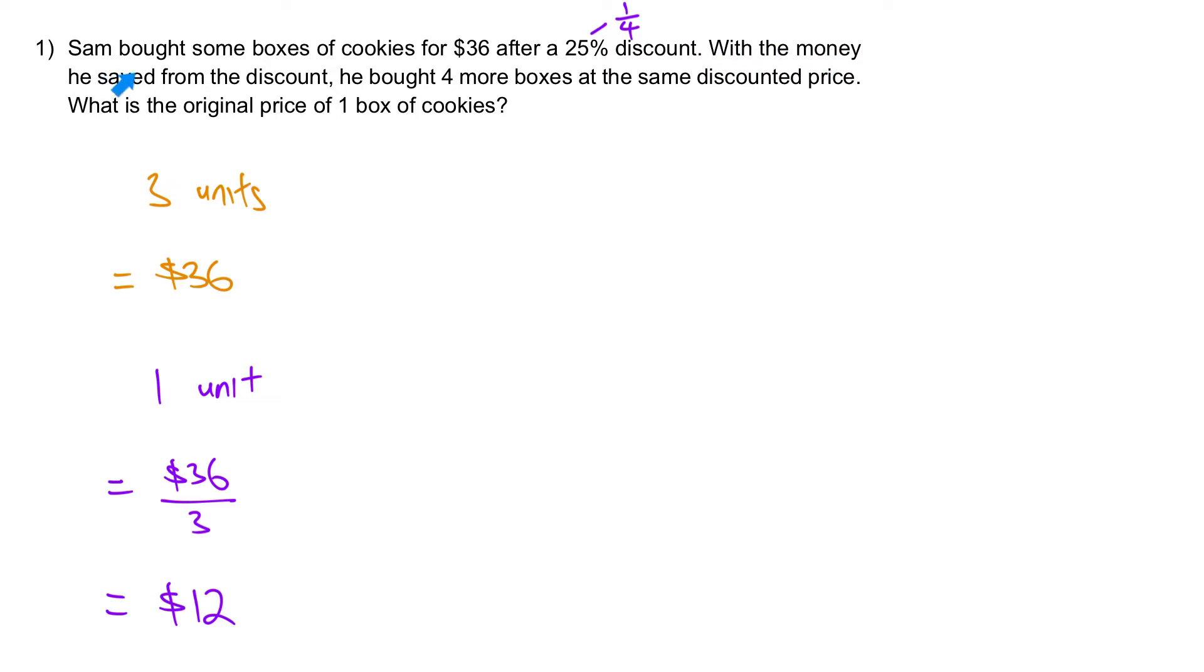With the money he saved, which is with the $12 from the discount, he can actually buy four more boxes at the same discounted price. Given that $12 buys you four more boxes, we can discover the discounted price.